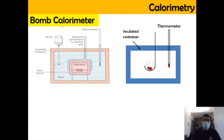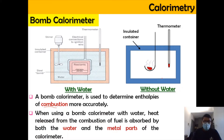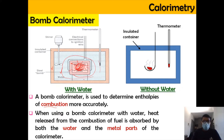The bomb calorimeter is used to determine the enthalpy of combustion much more accurately. We can fill the container with water or use it without water. When using a bomb calorimeter with water, the heat released from the combustion is absorbed by the water and also by the calorimeter. The basic idea is that when any substance is burned, the heat released will be absorbed by the water and also by the container or calorimeter.